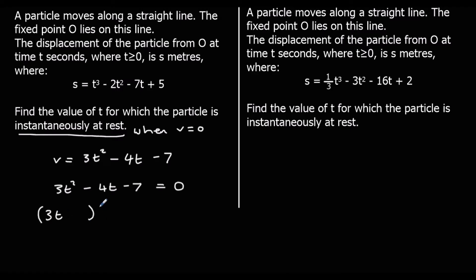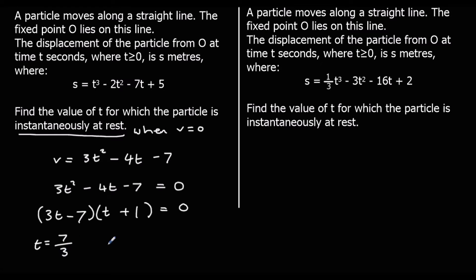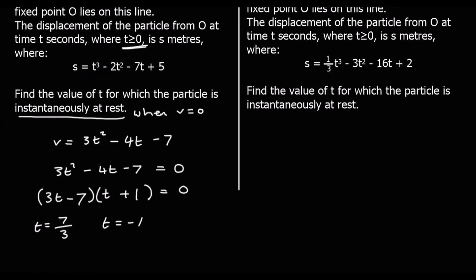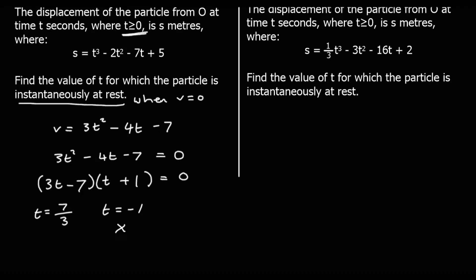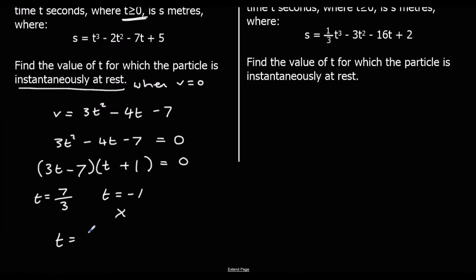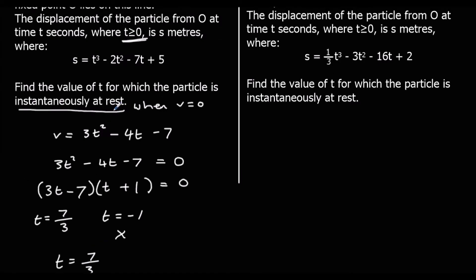The quadratic 3t squared minus 4t minus 7 factorises as (3t minus 7)(t plus 1) equals 0. So t equals 7/3 or t equals negative 1. But since t must be greater than 0, we discard t equals negative 1. So t equals 7/3, meaning the particle is instantaneously at rest after 2 and one-third seconds.